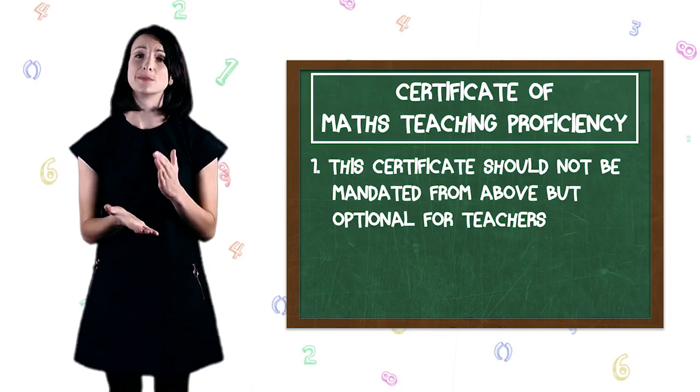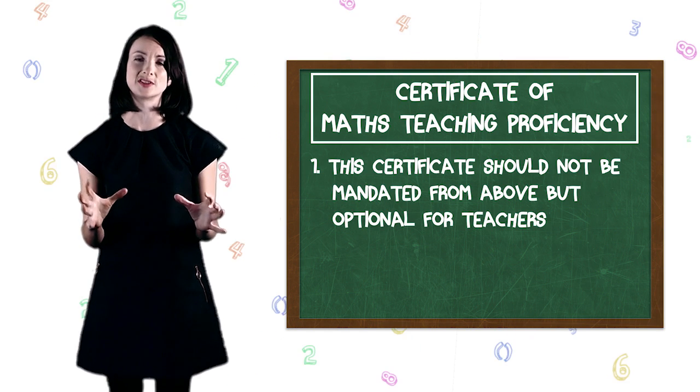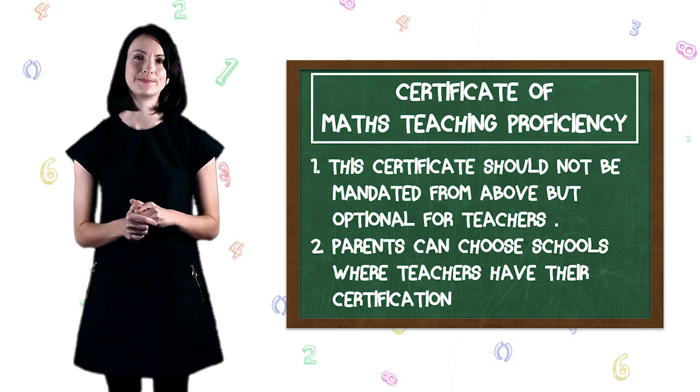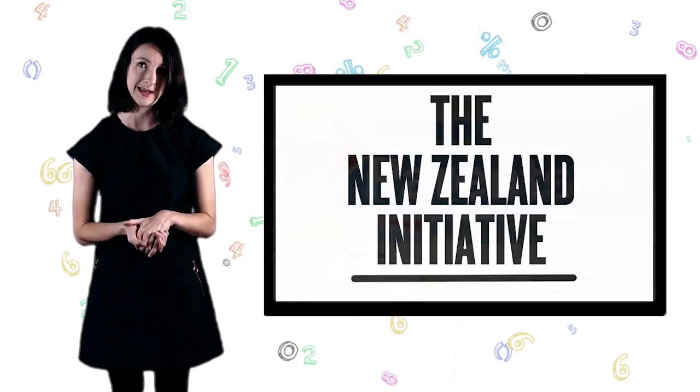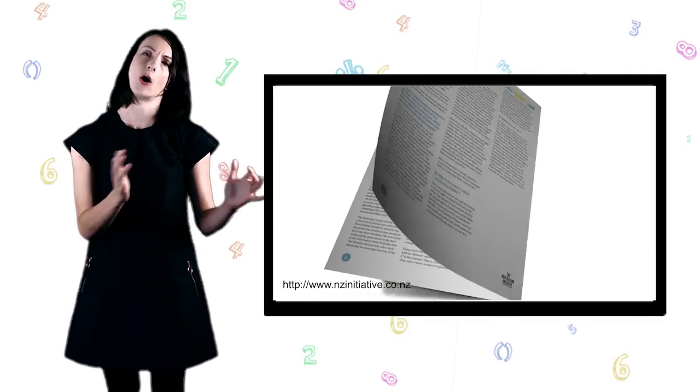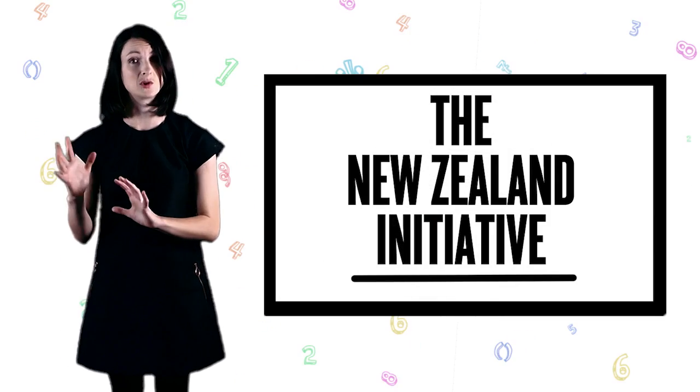And if parents think that it's important that teachers have good maths knowledge themselves, then they can choose schools where the teachers have their certification. And as for the way that maths is taught in schools these days, if you're confused or concerned or you think the balance isn't quite right, then talk to your school. We have an information sheet for parents on our website which outlines what you can do as a parent to talk to your school about getting the balance between the old school facts and processes and the new school strategies right. It's really important that your child gets a solid grounding in maths at primary school because this will open up their pathways at secondary school and beyond.